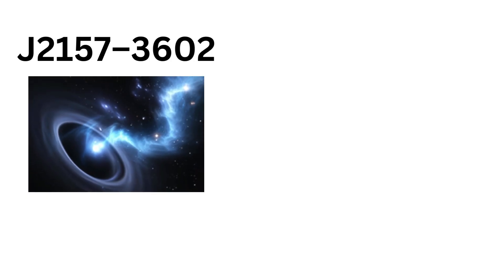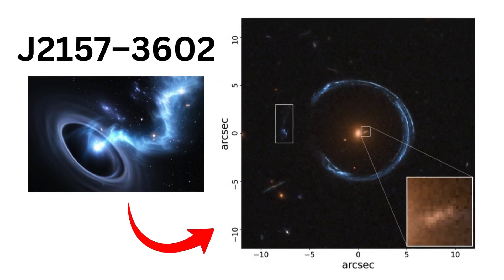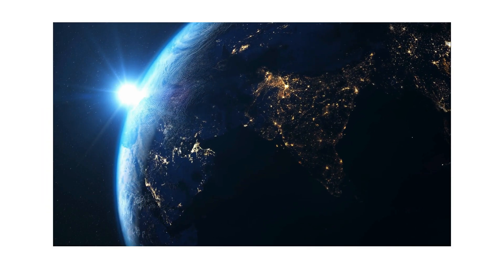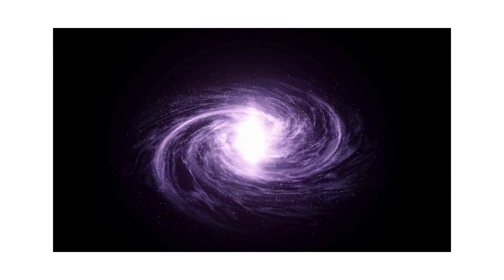J2157-3602 is an example of extreme activity. This quasar harbors a black hole growing at one of the fastest known rates in the universe, consuming nearly an Earth's worth of matter every second. The light from its accretion disk outshines entire galaxy clusters.